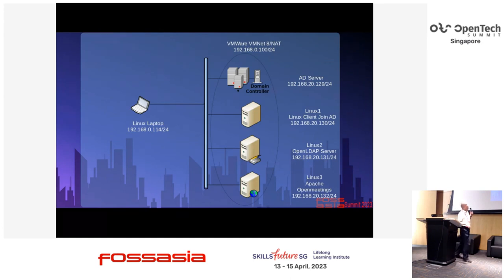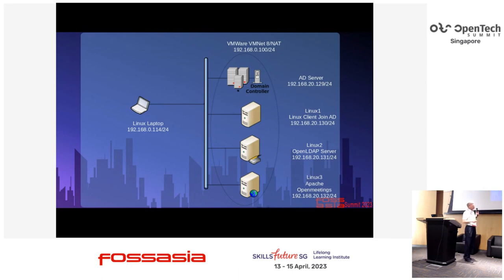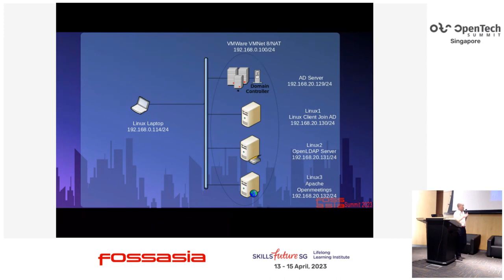This is my network topology. You can see there is this machine as client, and I did a network configuration. There are several servers: the first one is the AD server, the second one is the Linux client which I will use to log in to the AD domain, the third one is the machine where I installed the OpenMeetings server, and the last one is the client machine which will log in to the OpenMeetings server using AD credentials.